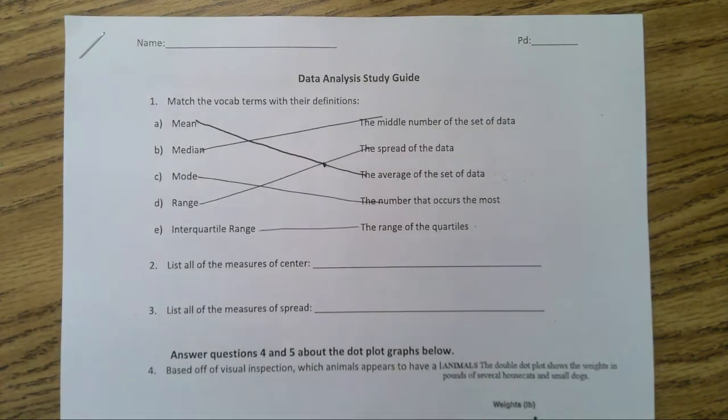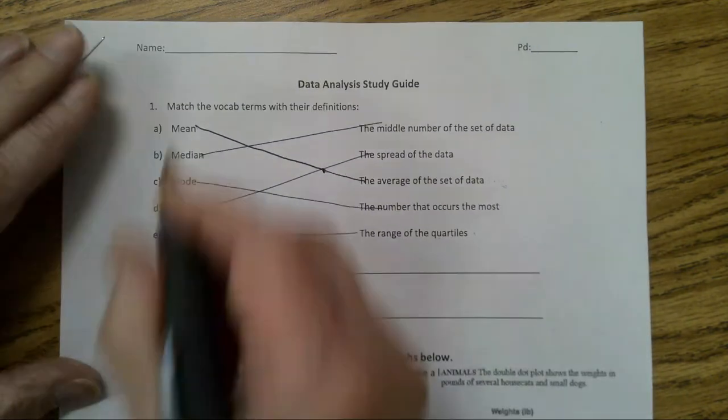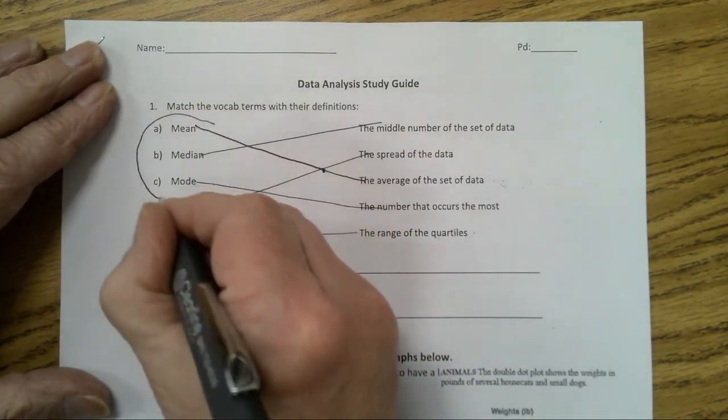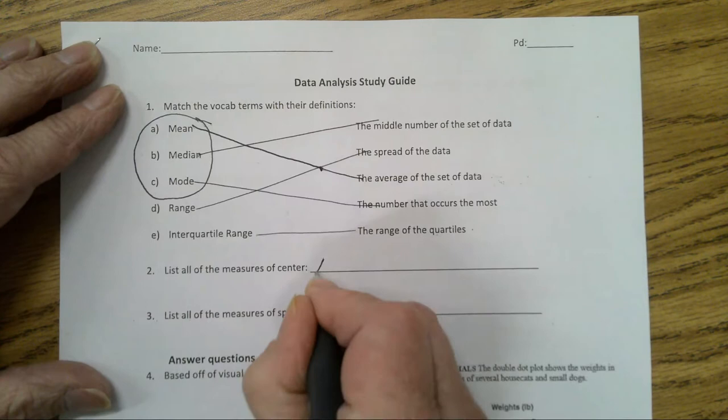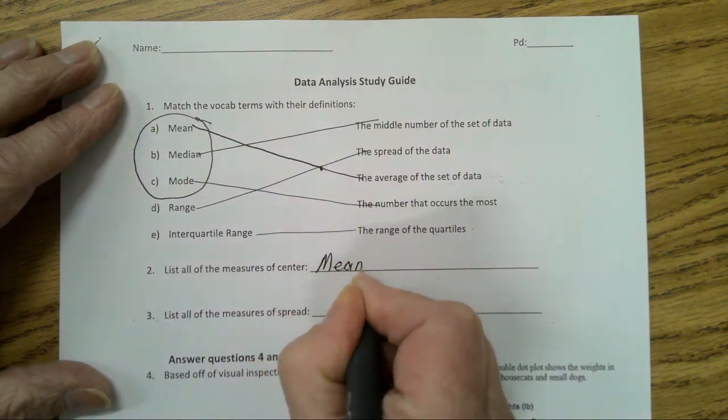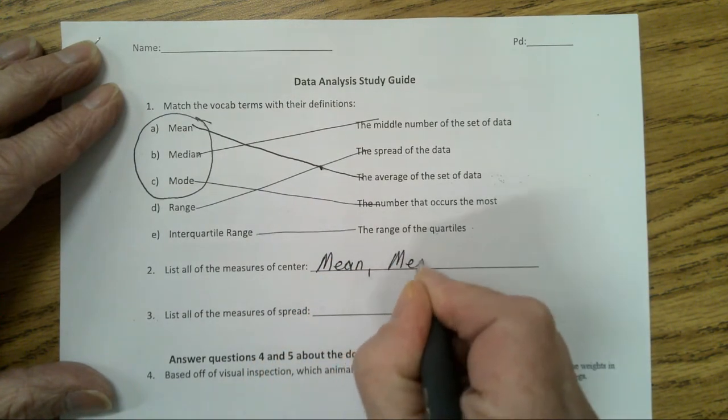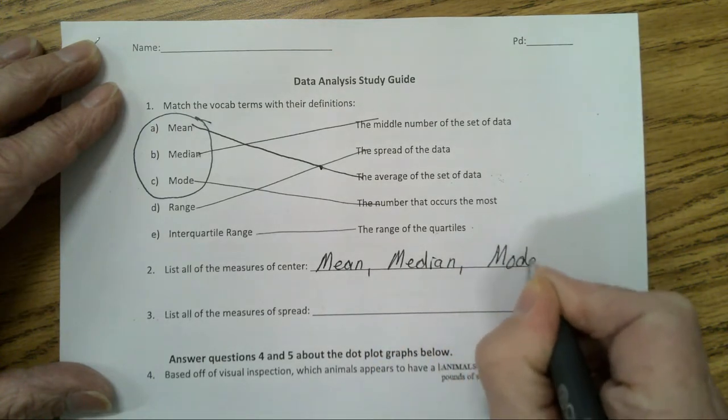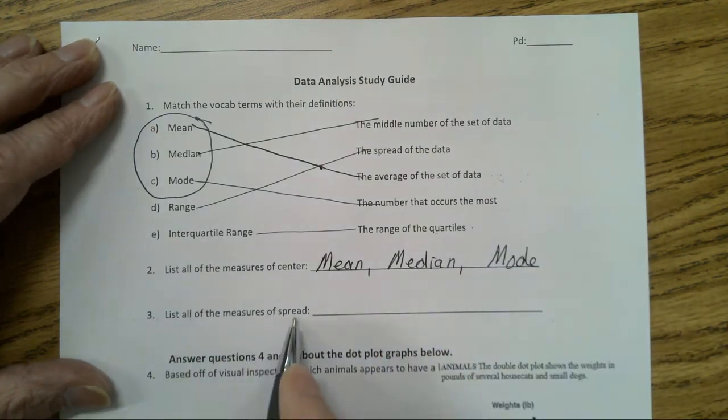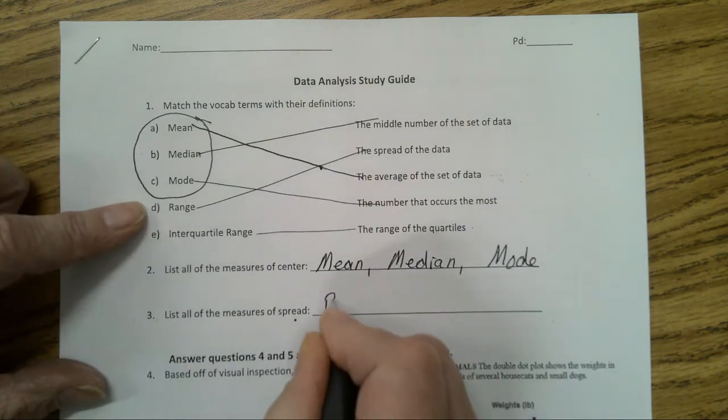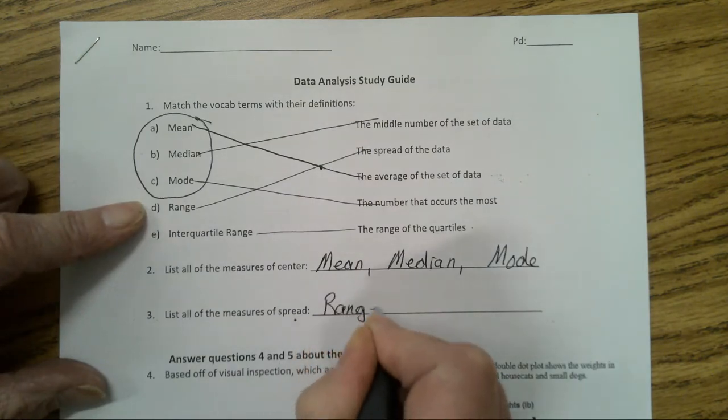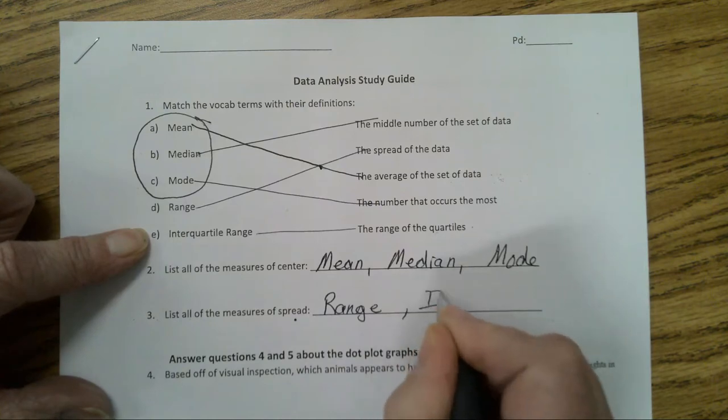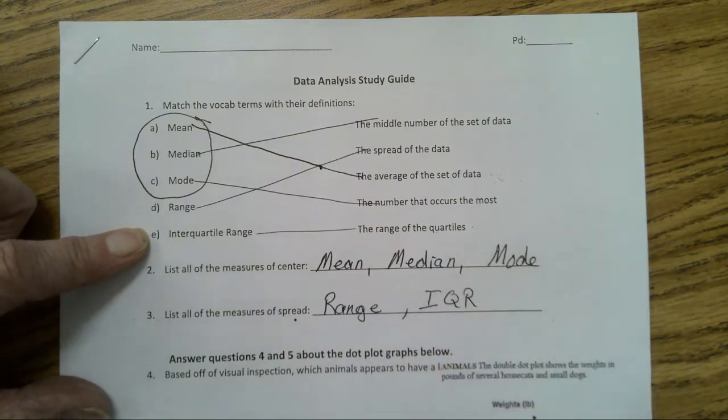List all the measures of center. That would be mean, median, and mode. List all the measures of spread. That would be range and interquartile range, IQR for short.